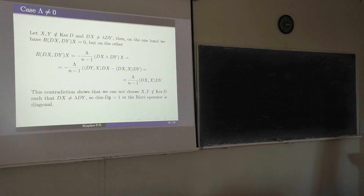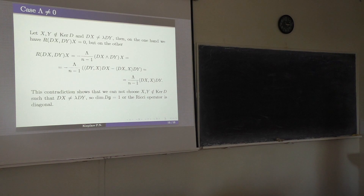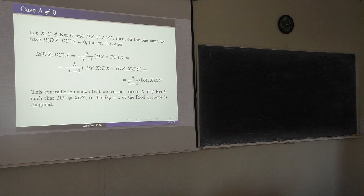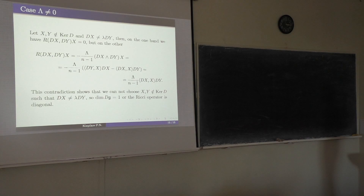Now consider the case lambda not equal to zero. Taking two vectors x and y not in the kernel such that Dx and Dy are linearly independent, on one hand the Riemannian tensor from Dx, Dy, Dx equals zero. But on the other hand, computing the Riemannian tensor through the Ricci tensor gives a non-zero result. This contradiction shows we cannot choose such vectors, so the dimension of D(g) is 1, or the Ricci operator is diagonal. Similar arguments apply in other cases and yield the main theorem.